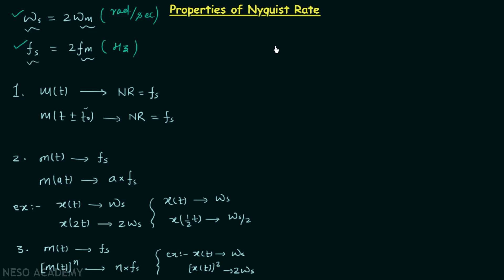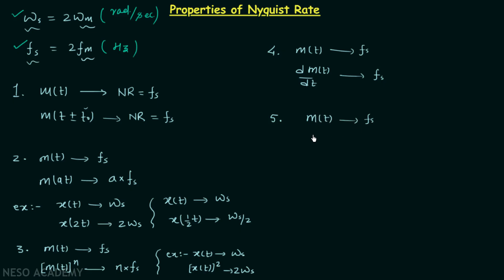In property number four, if we perform differentiation on the message signal to get dm(t)/dt, the Nyquist rate remains equal to fs — differentiation has no effect on the Nyquist rate. Similarly, in property number five, if we perform integration on the message signal, the Nyquist rate again remains the same.